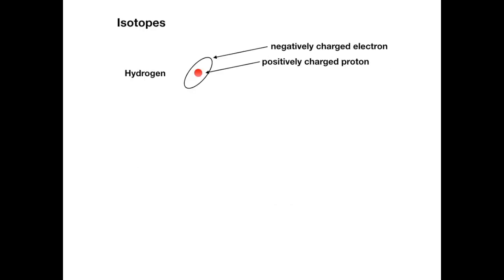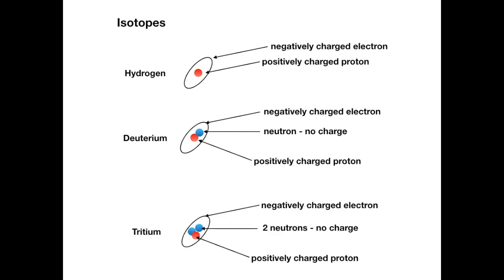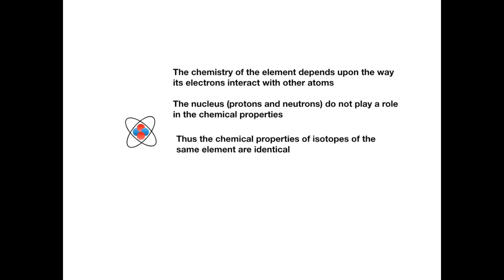Now I said do your own research on isotopes, but here's a little refresher. This is the hydrogen atom that we saw previously with its positively charged proton and its negatively charged electron. Another isotope of hydrogen is deuterium. And deuterium is like hydrogen except its nucleus contains a neutron, and neutrons have no charge. Another isotope of hydrogen is tritium, and tritium has two neutrons in the nucleus. So the isotopes are defined by the number of neutrons in their nucleus. Now as I've just said, the chemistry of the element depends upon the way its electrons interact with other atoms. The nucleus—protons and neutrons—do not play any role in the chemical properties of an element.